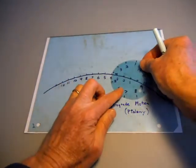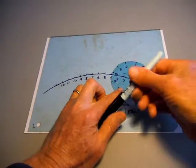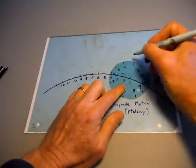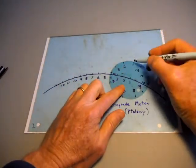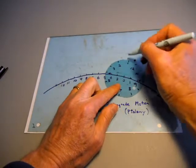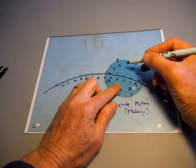So how does it work? We put it down at location number one. The planet is at location number one. When we go to two, the planet has advanced around the small circle to two.